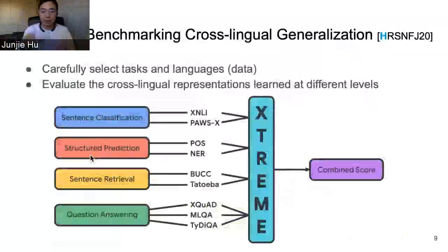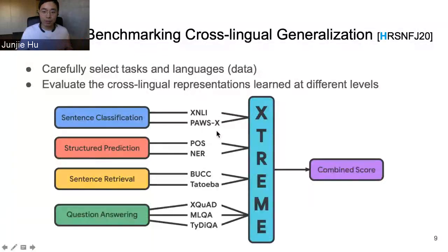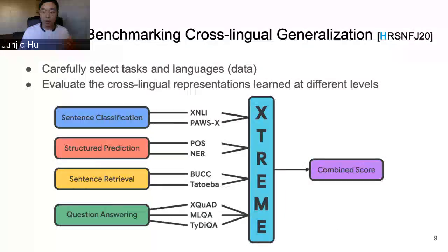To evaluate the cross-lingual generalization of this process, we propose the XTREME benchmark. The benchmark is also designed to encourage future research on new multilingual machine learning models. With this purpose in mind, we carefully selected four categories of tasks and 40 languages. These four categories include sentence classification, structure prediction, sentence retrieval, and question answering. A model is first pre-trained on monolingual data, then fine-tuned on all these tasks, and evaluated across all languages.